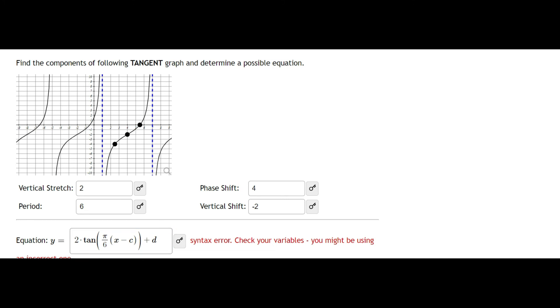C, this is your phase shift. My phase shift was 4. So I'm going to say x minus 4. D is my vertical shift. So instead of saying plus d, I will say minus 2. And this is going to be my equation.